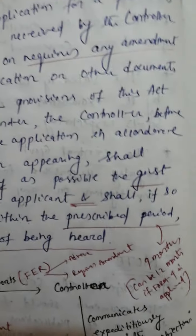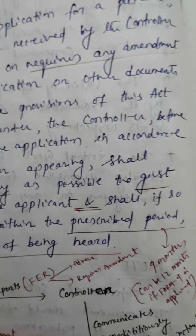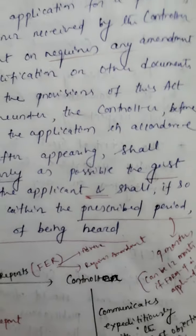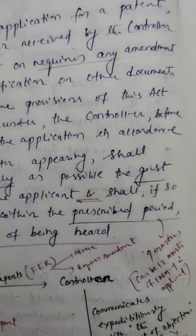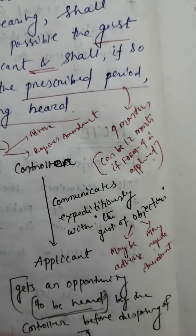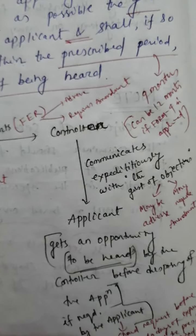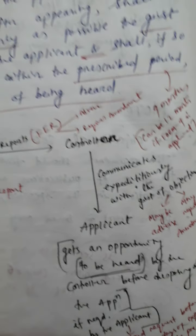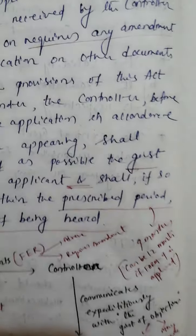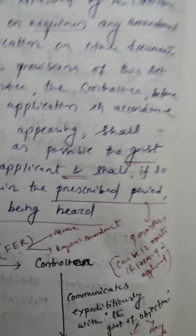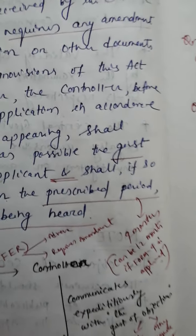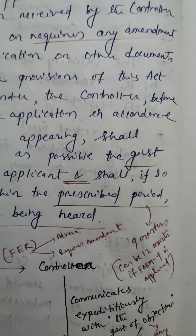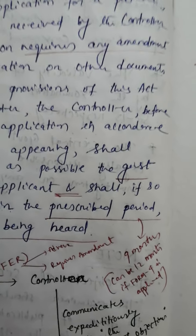The prescribed period is normally or ordinarily 9 months. Before 10 days of expiry of that 9-month prescribed period, the applicant can make a request. Sometimes an extra 3 months can be added to this period if we apply through Form 4.